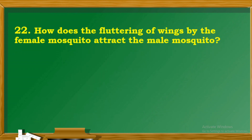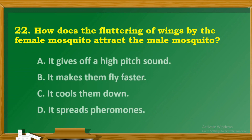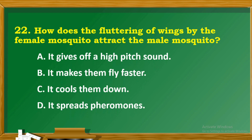Question 22: How does the fluttering of wings by the female mosquito attract the male mosquito? A. It gives off a high-pitched sound. B. It makes them fly faster. C. It cools them down. D. It spreads pheromones.